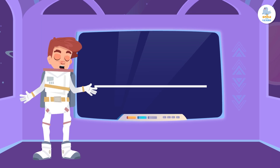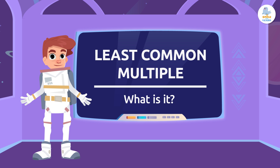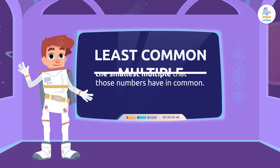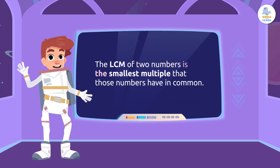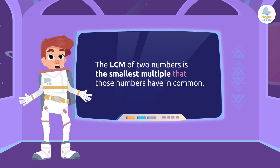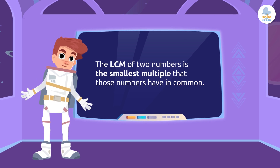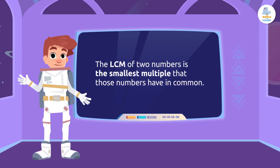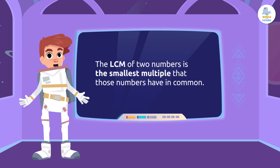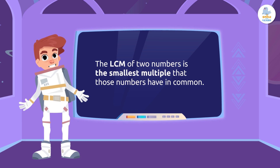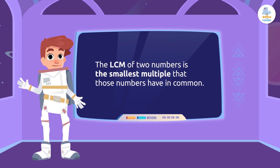So what is the least common multiple? The least common multiple of two numbers is the smallest multiple that those numbers have in common. There are many different ways of finding the least common multiple.